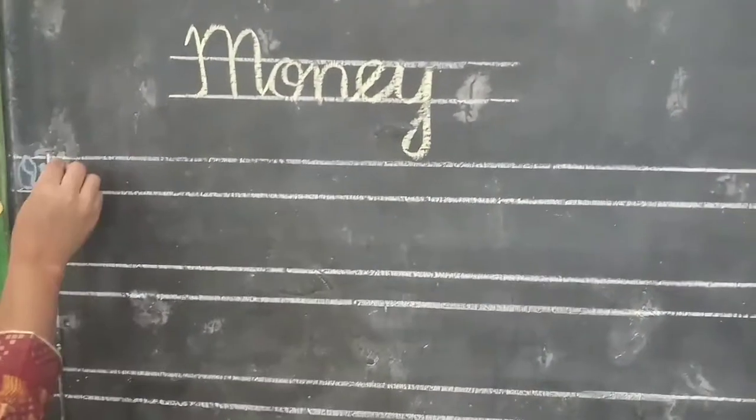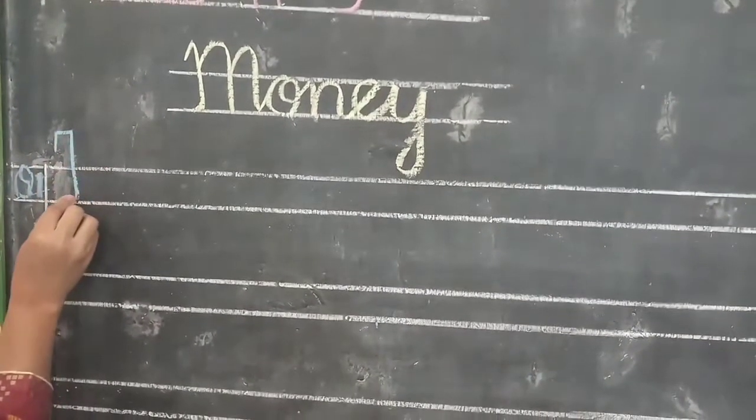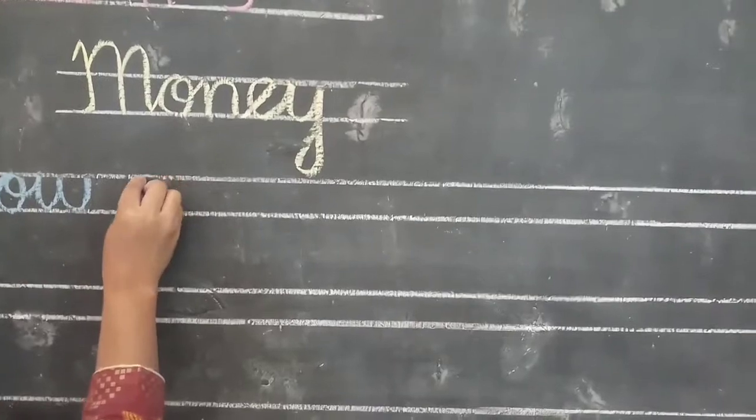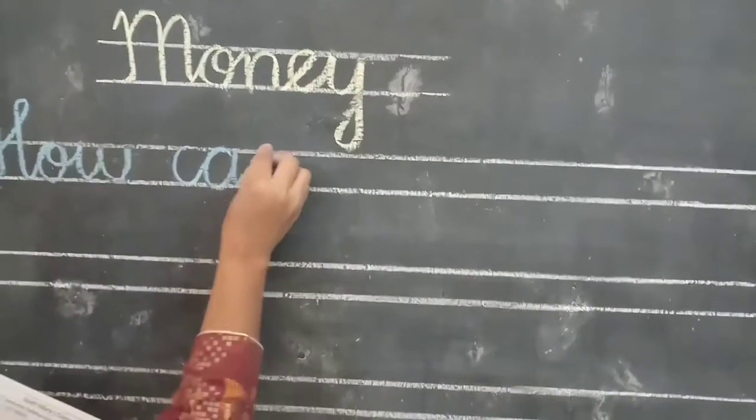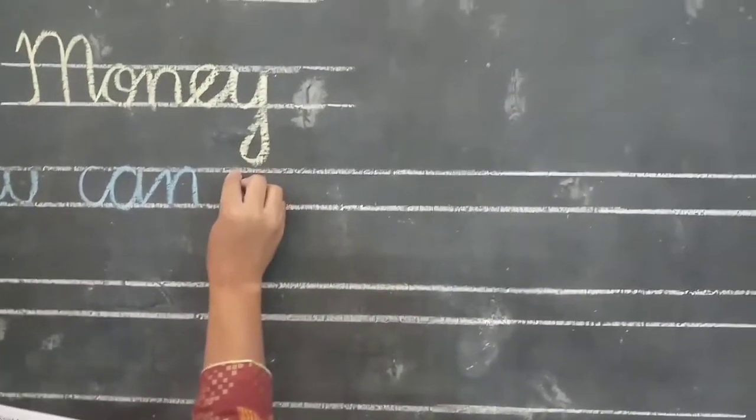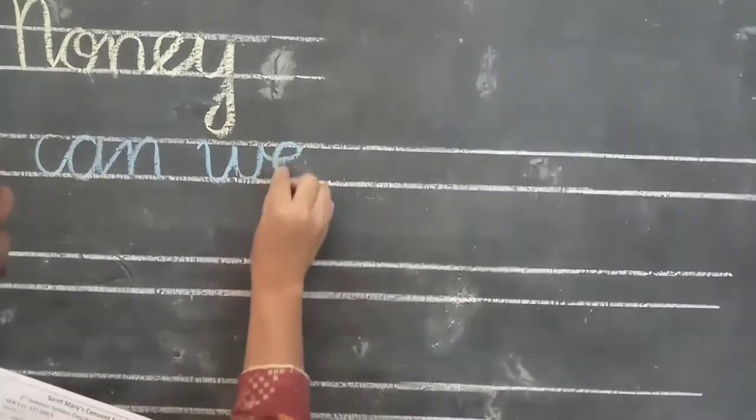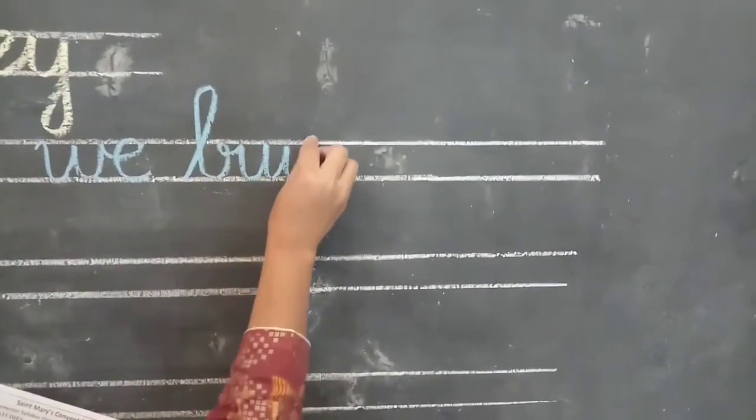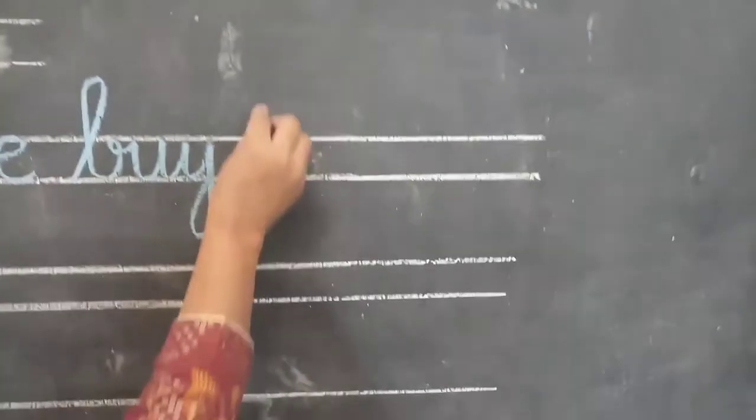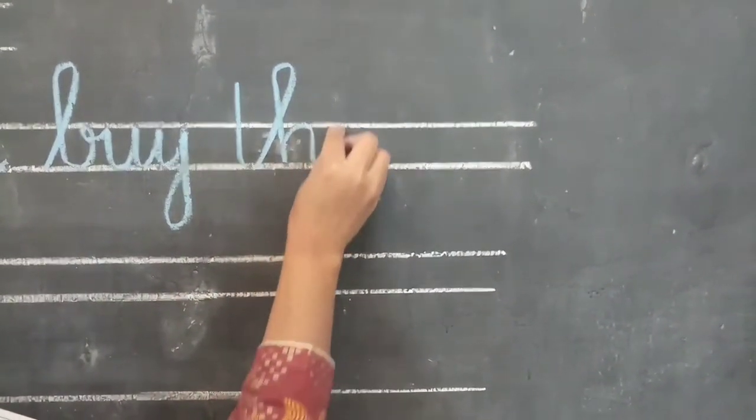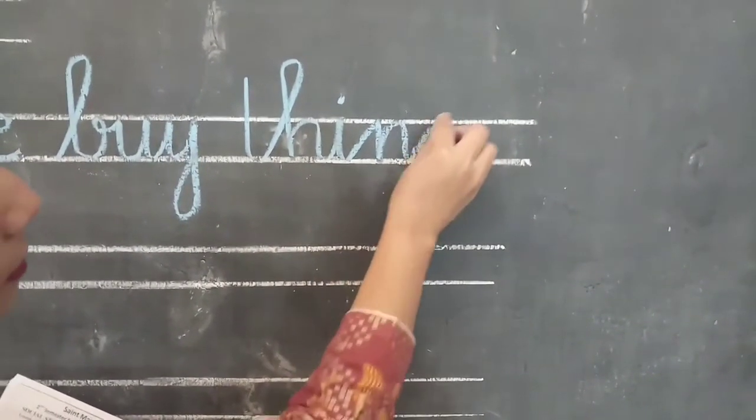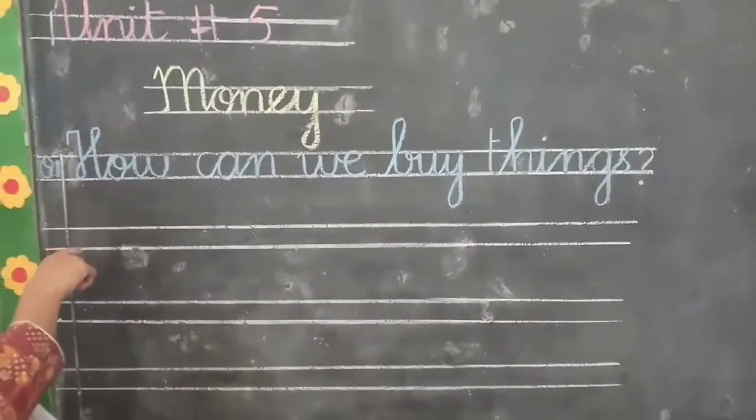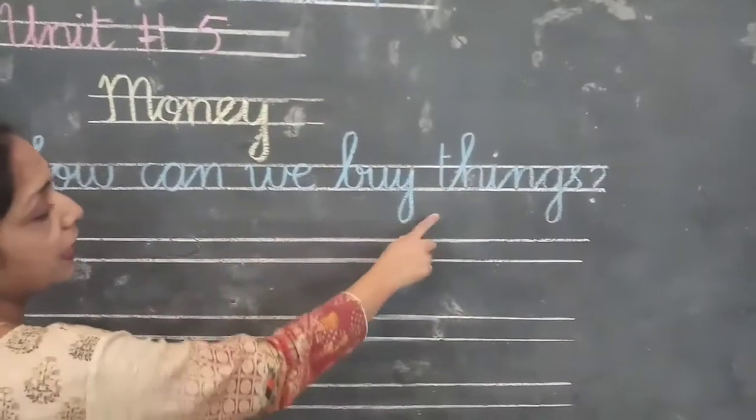Leave one line and write question number one. Question number one: How, H-O-W. Take one finger space. Can, C-A-N. Take one finger space. We, W-E. Take one finger space. Buy, B-U-Y. Take one finger space. Things, T-H-I-N-G-S, question mark. We can repeat this question. How can we buy things?